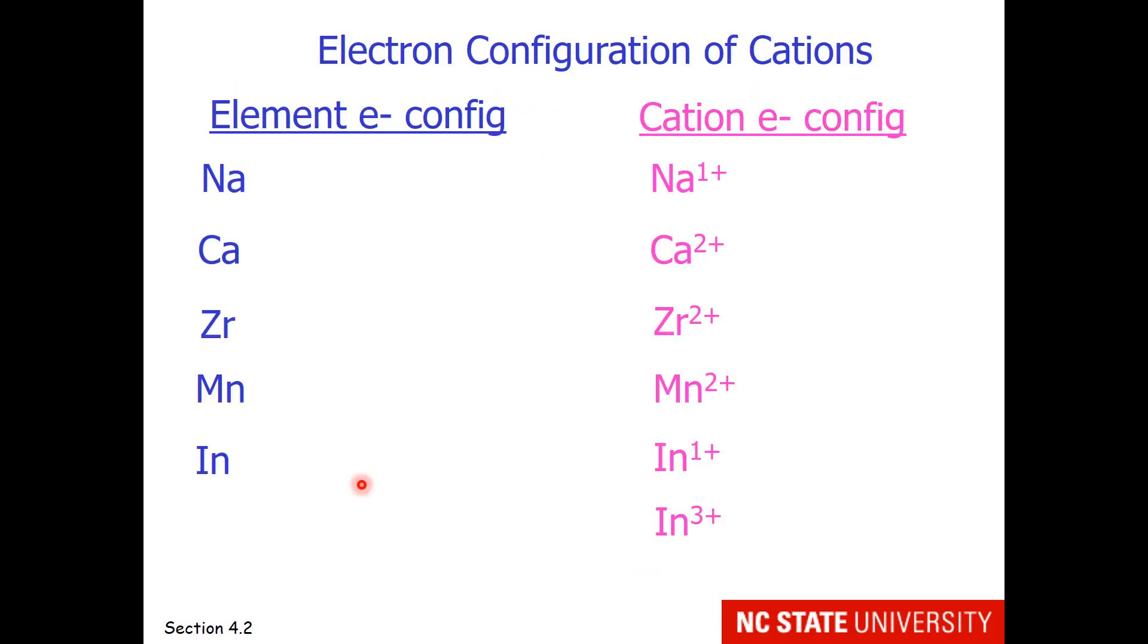Here are some examples of electron configuration of cations. Neutral sodium is neon 3s1, so we have one valence electron to remove to get sodium 1+, which is isoelectronic with neon.